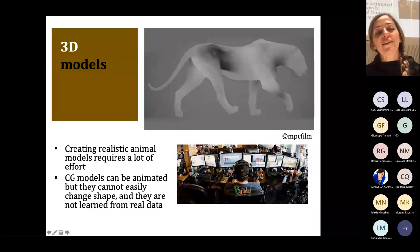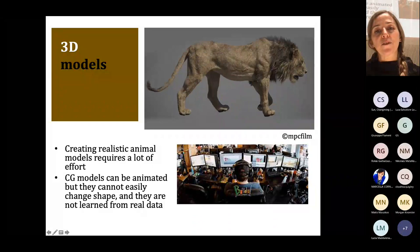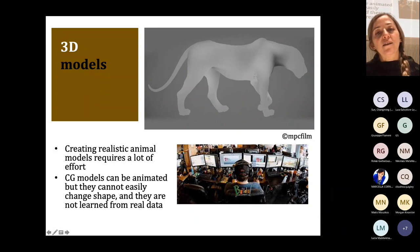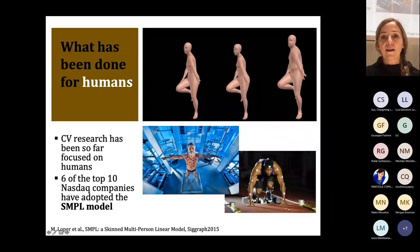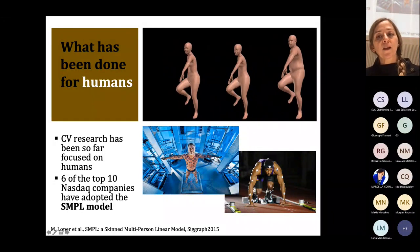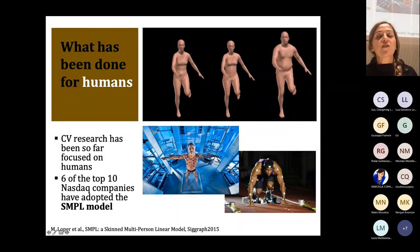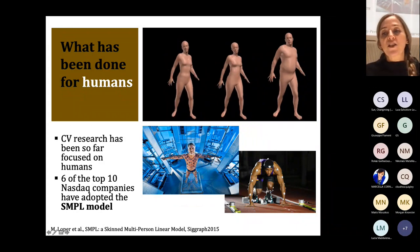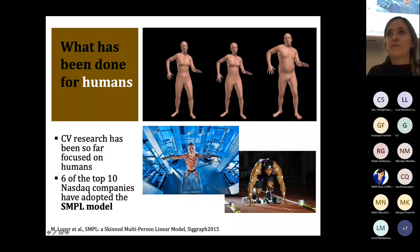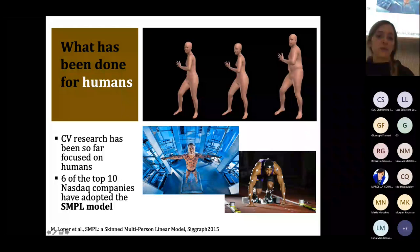Creating realistic animal models requires a lot of effort. We have very realistic examples from the film industry, but those CG models can be animated but cannot easily change shape to represent a population of individuals. You are probably familiar with 3D models of the human body, face, and hands — these can represent people of different body shapes and have been widely adopted by industry. The shape deformation model is learned from thousands of 3D scans, and a 3D pose prior is learned from motion capture data used to regularize fitting to images and video. But animals are not cooperative.